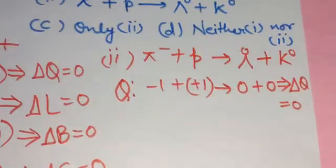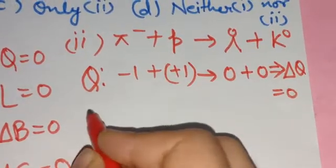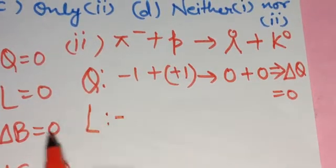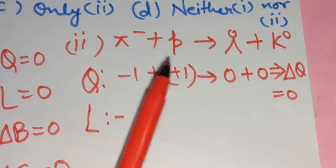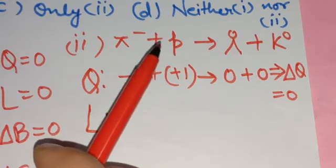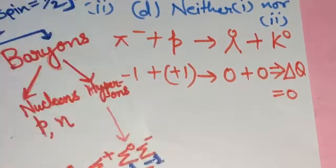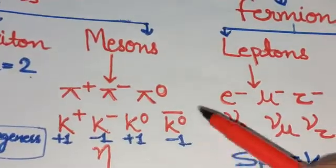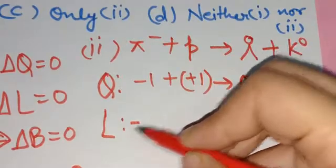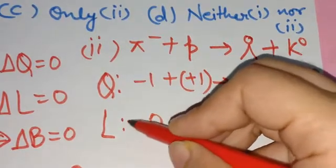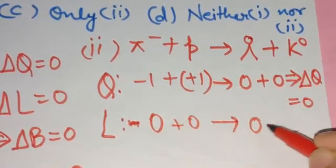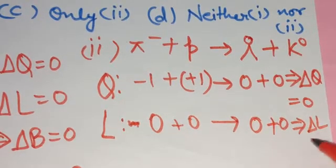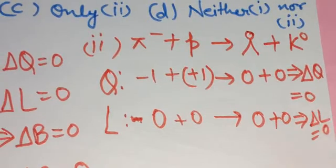Next, let's check the lepton number. Pi negative is a meson particle — not a lepton. Proton is a baryon — not a lepton. Lambda naught is also a baryon — not a lepton. K naught is a meson — not a lepton. None of these particles are leptons, so the lepton number is 0 plus 0 on each side, giving delta L equals 0. Lepton number is conserved.